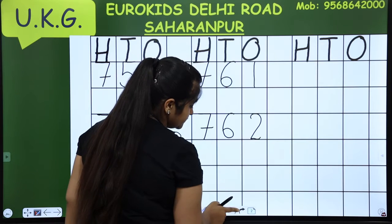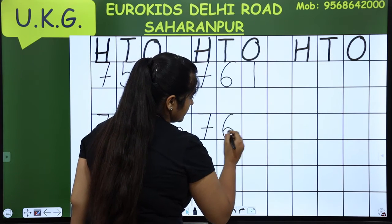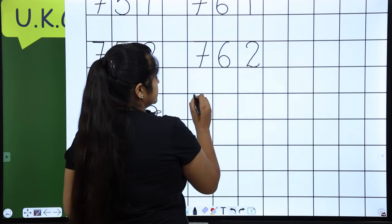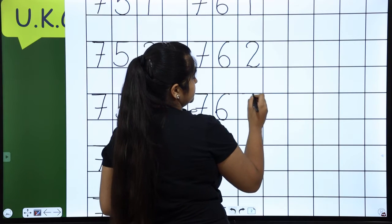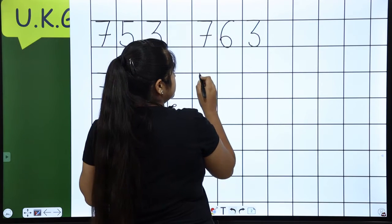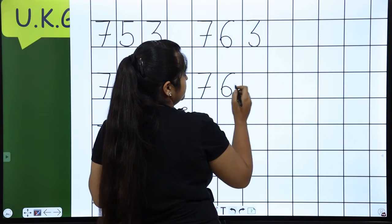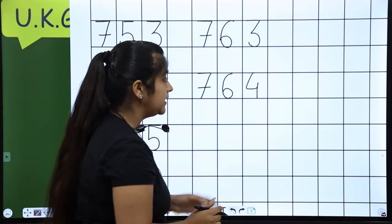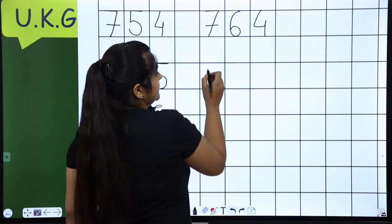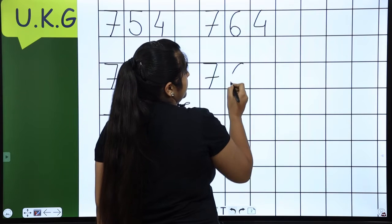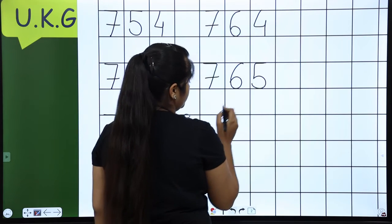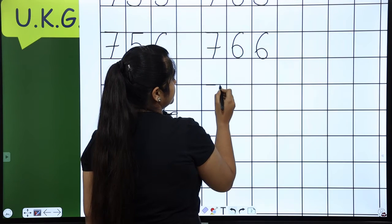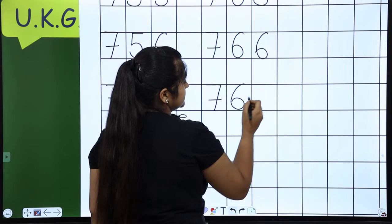762. Like this, you have to write it. Nice and neat writing. Okay? 763, 764. Are you all writing with me? Yes, you have to write with ma'am only. And nice and neat writing. 765, 766, 767.